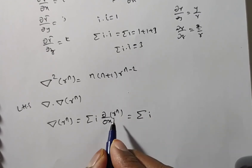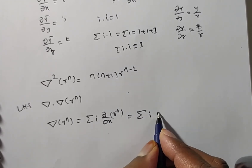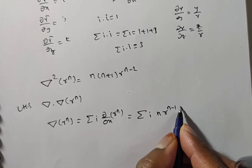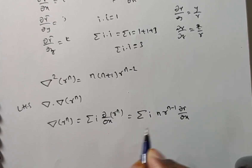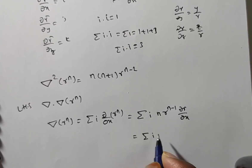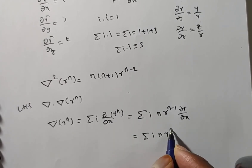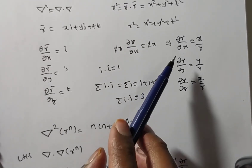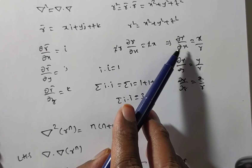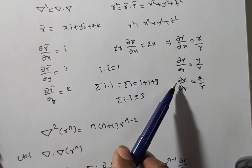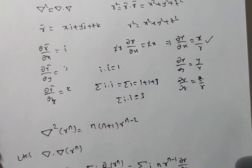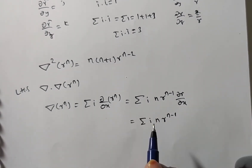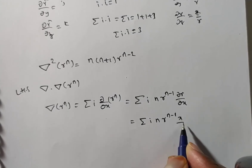Differentiating: summation of i · n·rⁿ⁻¹ · (∂r/∂x). Now ∂r/∂x = x/r, so substituting: summation of i · n·rⁿ⁻¹ · (x/r). The r terms combine: rⁿ⁻¹ · (1/r) = rⁿ⁻², and n is constant so it comes outside the summation.